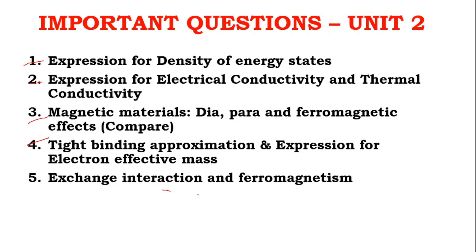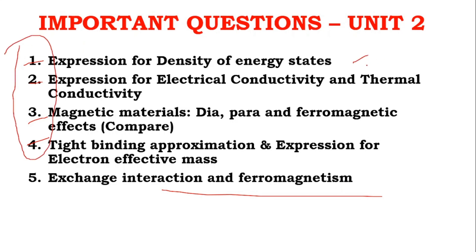Unit 2 has 5 questions, of which 4 are confirmed and the 5th — exchange interaction of ferromagnetism — you should just go through. The first three confirmed questions are the derivation for density of energy states, the expression for electrical conductivity and thermal conductivity, and magnetic materials covering dia, para, and ferromagnetism. The fourth is the tight binding approximation and expression for electron effective mass — all three derivations are confirmed.